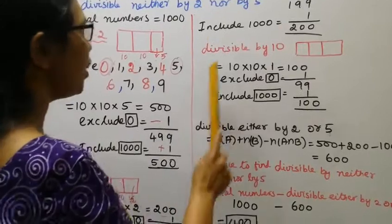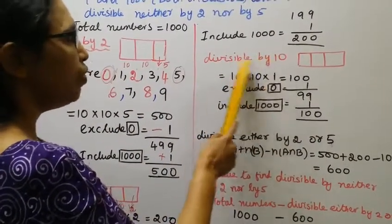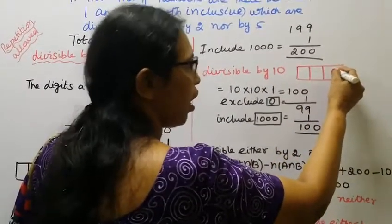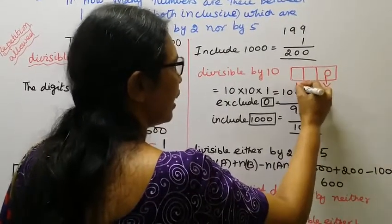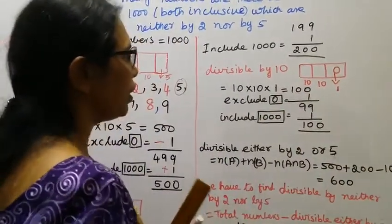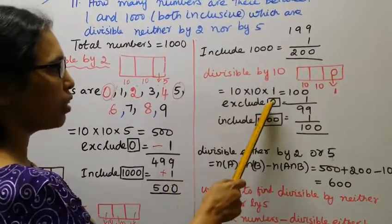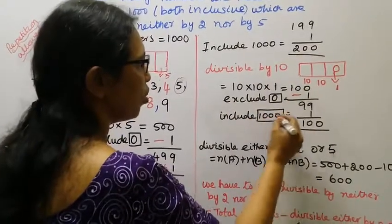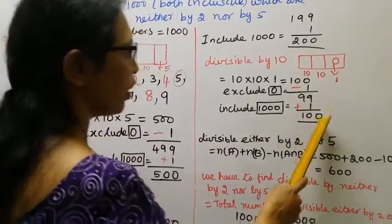Divisible by 5 and 2. LCM is divisible by 10. 10 into 10 into 1, that is equal to 100. Exclude zero, minus one, 99. Include thousand, plus one. 99 plus 1, 100.